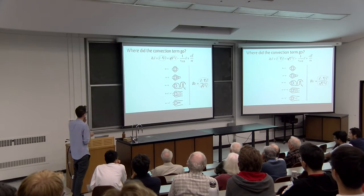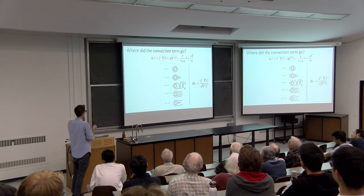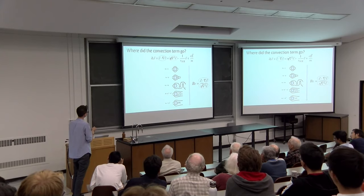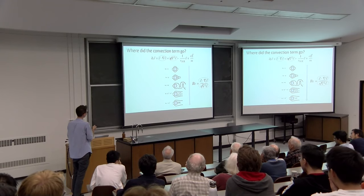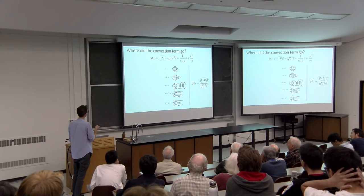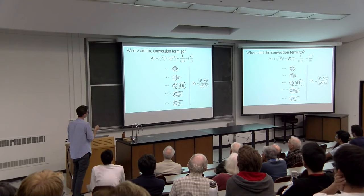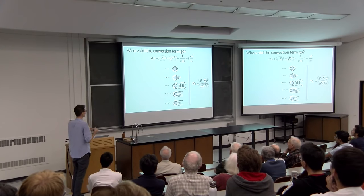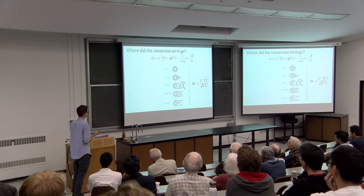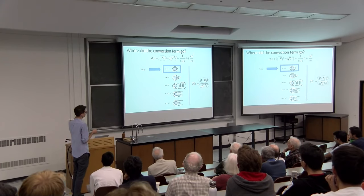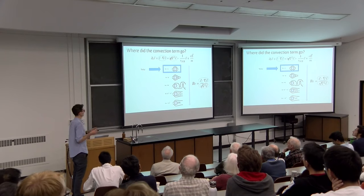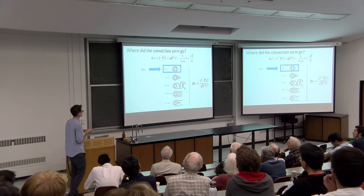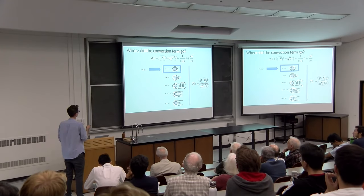The convection term actually vanishes because in the kind of systems we're interested in it's mostly negligible. The Reynolds number is the ratio that compares the convection term to the viscous term. At low Reynolds number we have viscous flows; at higher Reynolds number the convection term becomes important and leads to complicated phenomena like turbulence. One can show that in solid-state systems the Reynolds number is going to be extremely small, and reaching higher Reynolds number is actually a challenge and a topic of current research. For today, I'll focus on low Reynolds number flows and kill the convection term.